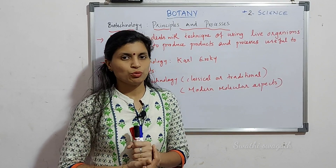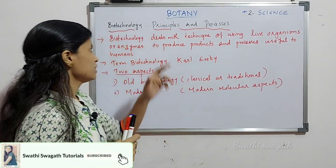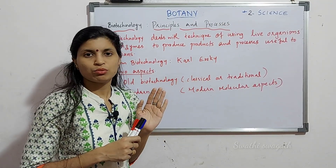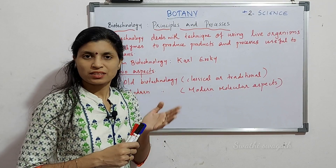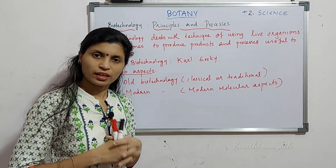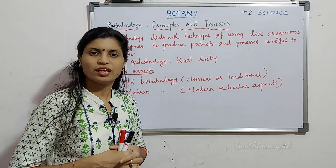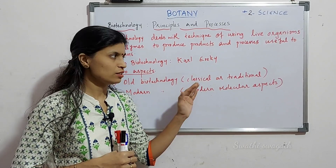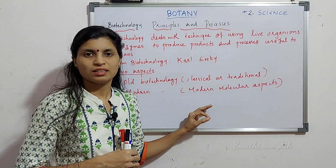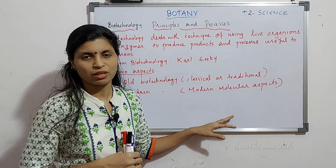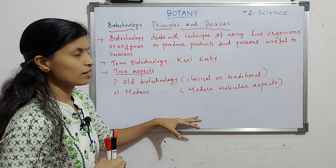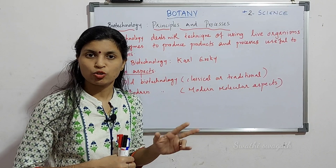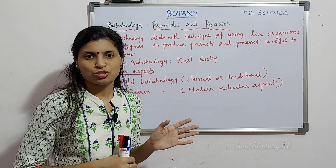The Biotechnology chapters are called Principles and Processes. These two chapters are very important — they include diagrams for practical, record work, and theoretical content. Now, what is biotechnology? This term is related to branches of biology like biotechnology, microbiology, and bioinformatics.